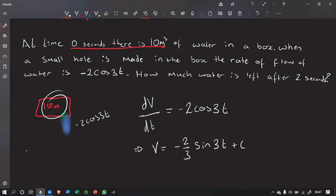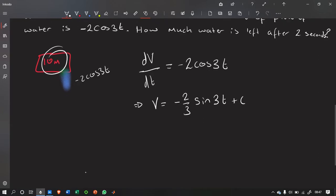So, this is where the initial conditions come in handy. Because it says that at 0 seconds, there is 10 metres cubed. So, let's substitute for v, 10. It's going to equal to minus 2 over 3 sin 3 times 0 plus c. Which gives us 10 is equal to c. Because this bit here just becomes 0.